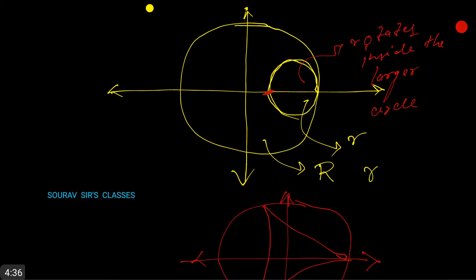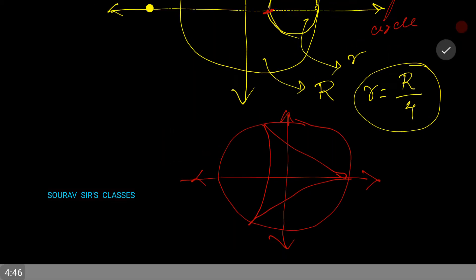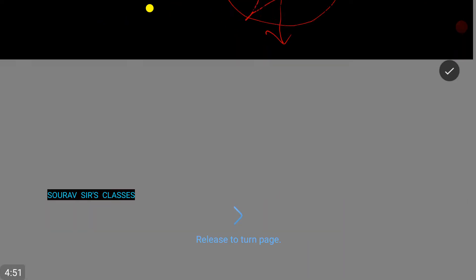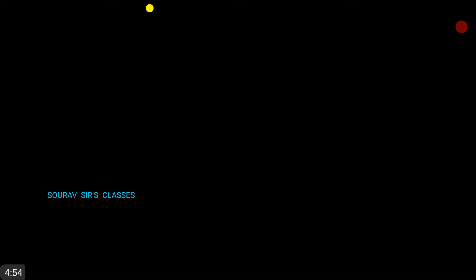Let's write down the parametric equations. The parametric equations will be: x equals a cos cubed t, and y equals a sin cubed t, where a is the radius of the fixed circle.